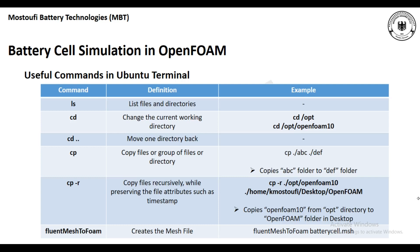The last command is `fluentMeshToFoam`, which we're going to use in our first simulation and is used for creating the mesh file. For example, if you have created your mesh file from ANSYS Fluent, you can use the .msh file, copy it into your case setup directory, and by using the `fluentMeshToFoam` command in the Ubuntu terminal you simply create the mesh file you need for the simulation setup.